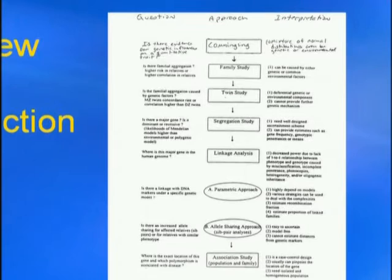We then move into talking about family studies and segregation analysis. The purpose of segregation analysis is to provide stronger evidence that our trait is actually genetically influenced — specifically, whether the trait segregates in families. I should note that commingling analysis, familial aggregation, twin studies, and segregation analysis none of these require any genotype data. These are modeling approaches designed to help determine whether the trait is genetically influenced, and if so, what is the mode of inheritance — is it recessive, dominant, or co-dominant?